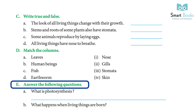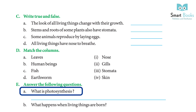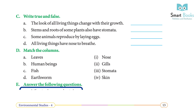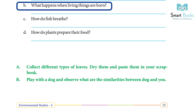Answer the following questions. A: What is photosynthesis? Answer: Leaves prepare food for plants, and the process of preparing food is called photosynthesis. B: What happens when living things are born? Answer: All living things are born, become adults, grow old, and die. You can note many changes during the period of growth.